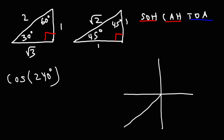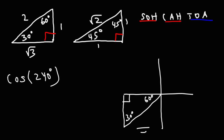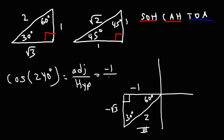With a reference angle of 60, we know 30 is the remaining angle. Across the 30 degree angle is 1, and in quadrant 3 both x and y are negative, so that side is negative 1. Across 60 is root 3, but it's negative square root of 3. The hypotenuse is positive 2. Cosine 240 is the same as cosine 60 in quadrant 3: adjacent over hypotenuse is negative 1 over 2. So cosine of 240 equals negative one-half.